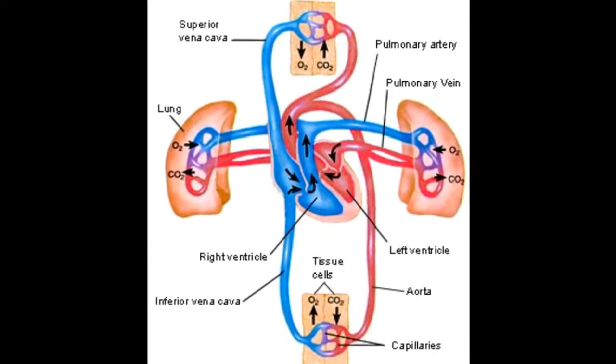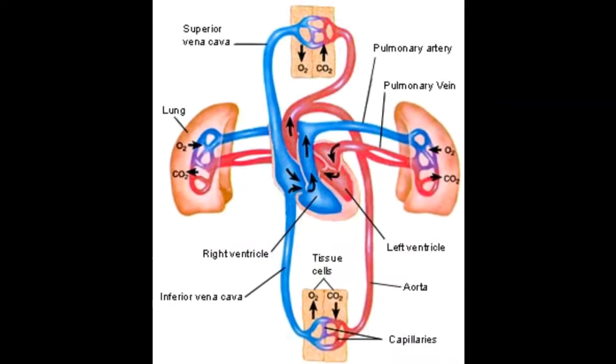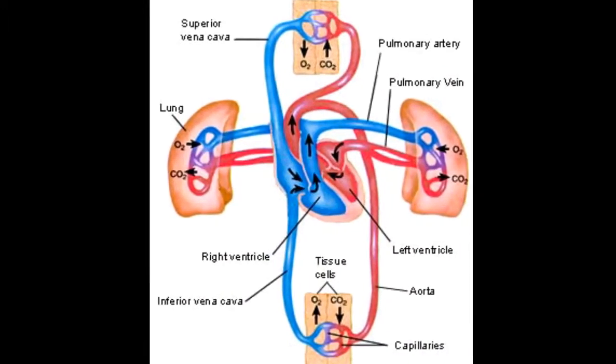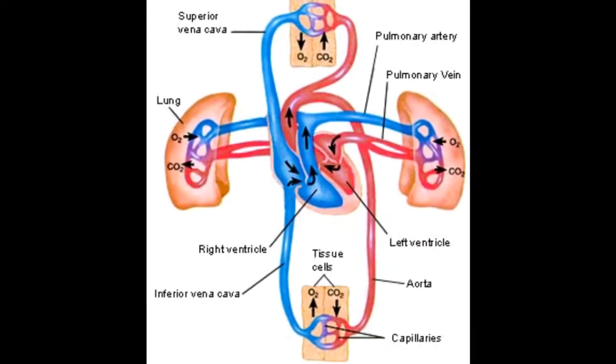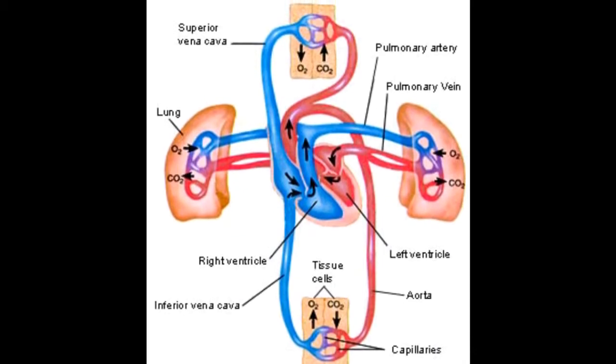The blood goes up through the pulmonary, either the semilunar or the pulmonary valve into the pulmonary artery, which takes the blood to both lungs.